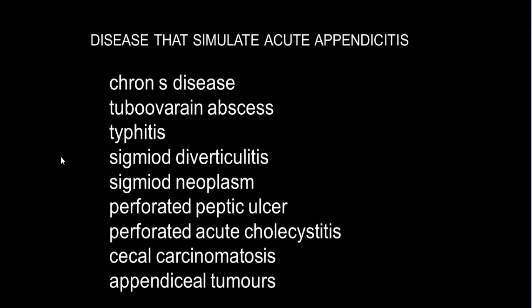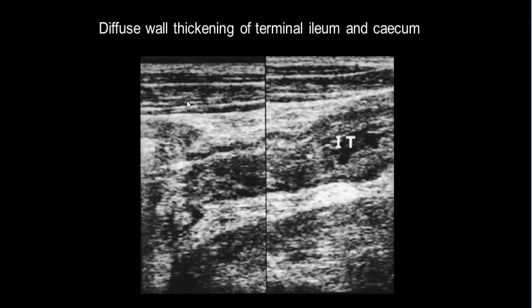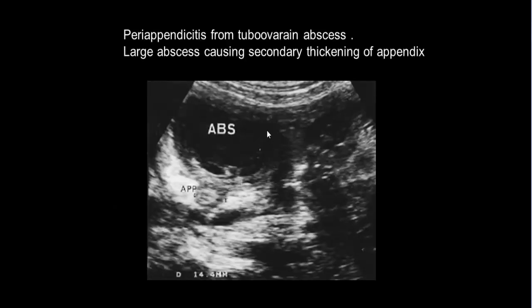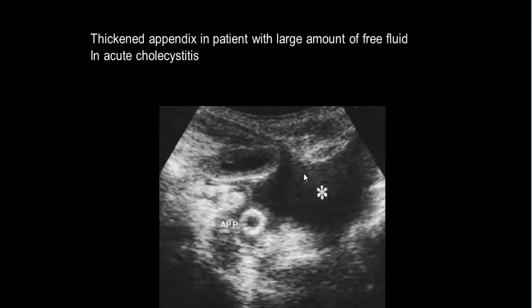Diseases that simulate acute appendicitis include Crohn's disease, tubo-ovarian abscess, typhlitis, sigmoid diverticulitis, sigmoid neoplasm, perforated peptic ulcer, perforated acute cholecystitis, cecal carcinomatosis, and appendiceal tumors. Examples include: diffuse wall thickening of the terminal ileum and cecum in Crohn's disease, markedly thickened terminal ileum and cecal wall with appendix behind the cecum, large abscess causing secondary thickening of the appendix from tubo-ovarian abscess, and a thickened appendix in a patient with large free fluid from acute cholecystitis.